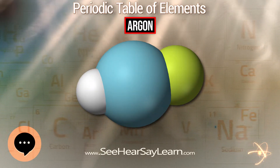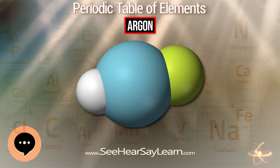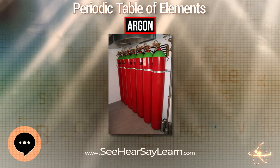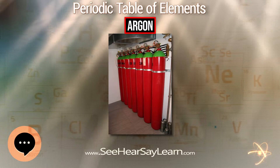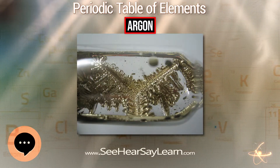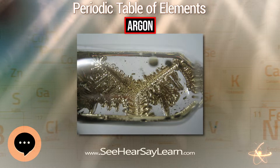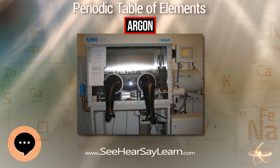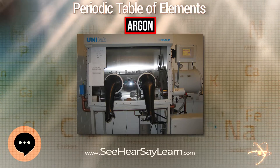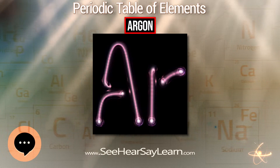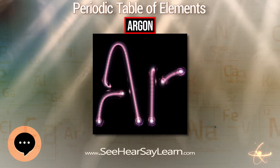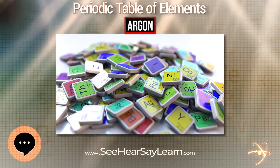37Ar is created from neutron capture by 40Ca followed by an alpha particle emission, as a result of subsurface nuclear explosions, and has a half-life of 35 days. Between locations in the solar system, the isotopic composition of argon varies greatly. Where the major source of argon is the decay of 40K in rocks, 40Ar will be the dominant isotope, as it is on Earth.